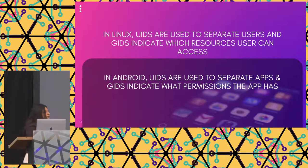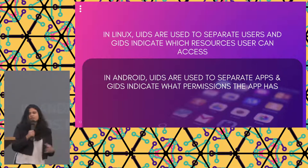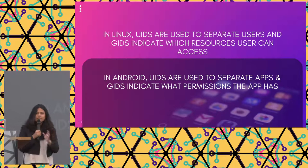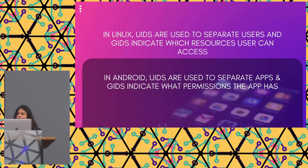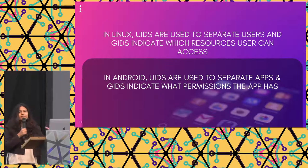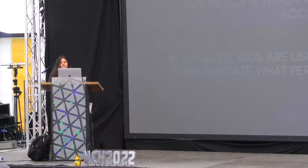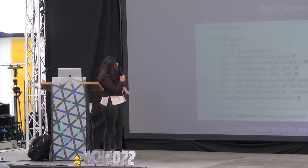In Linux, UIDs are used to separate users because Linux was designed to be a multi-user OS — users cannot interfere with each other's spaces or access each other's resources. Android repurposed the same logic for apps. Every app has its own UID and a set of permissions listed as GIDs. That is, in brief, how permissions actually work in kernel land in Android.